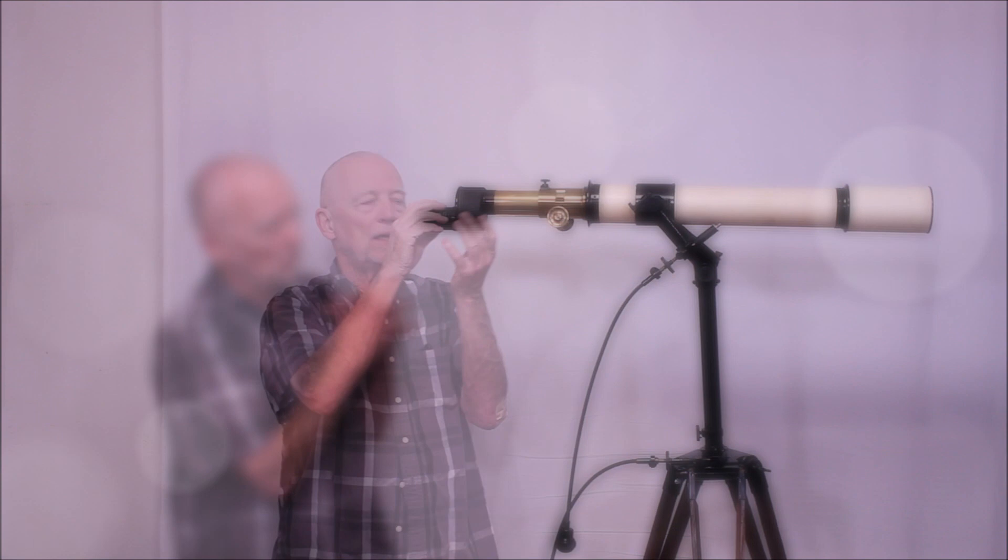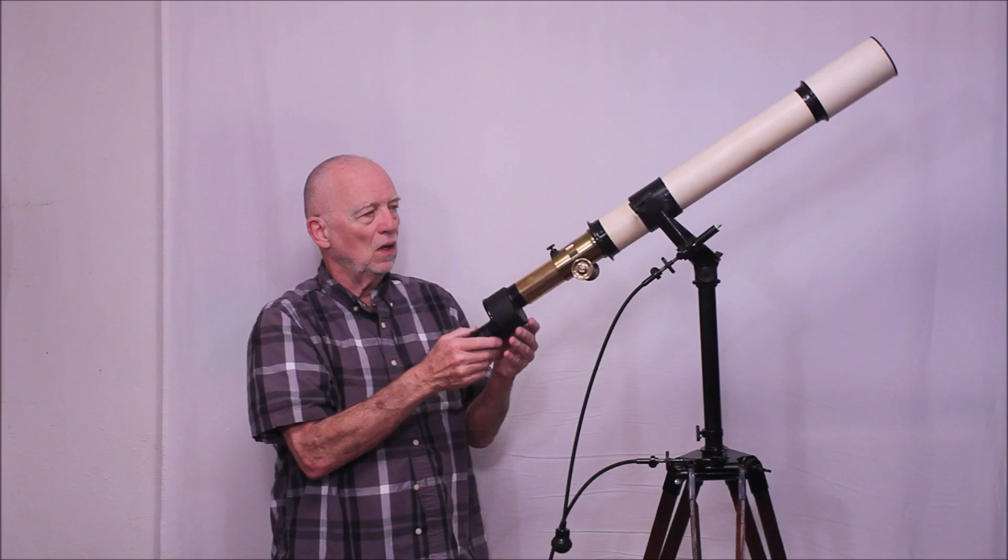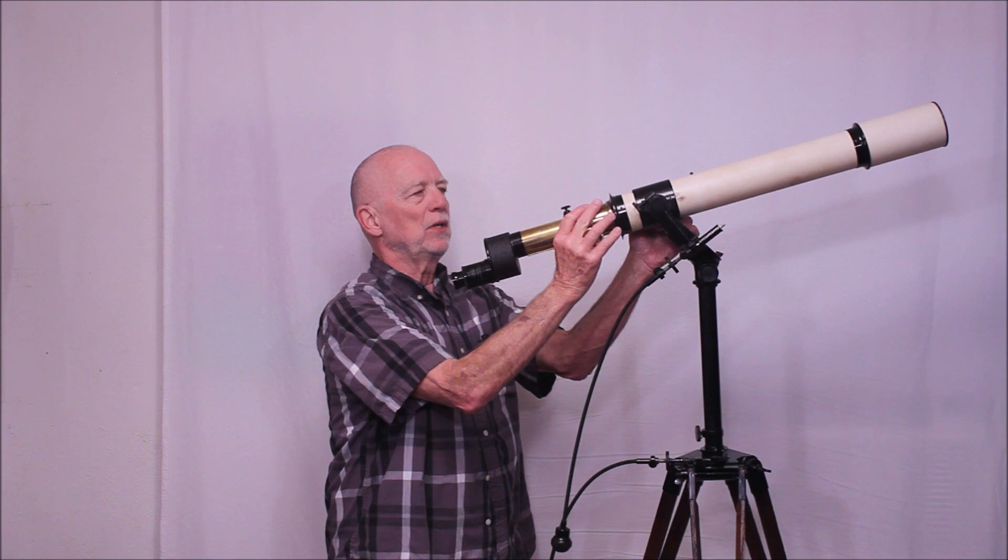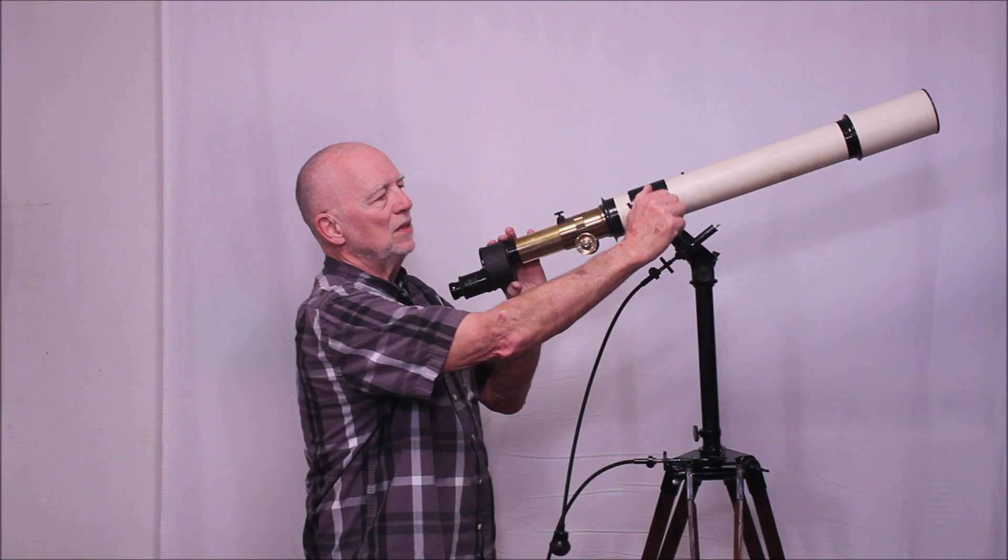In addition to being used as a terrestrial telescope, you could of course use this as an astronomical telescope. By the way, this little device here is a locking mechanism. A really clever locking mechanism. And you can balance the scope depending on what accessories you have here and so forth. Balance it and then tighten it down right here. So that's pretty clever.